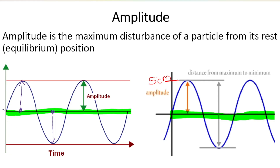If this is like an x-axis labeled zero, with the crest at positive two and the trough at negative two — measured in centimeters — the amplitude is two centimeters. The negative two just indicates it's a trough going downward, but you always state amplitude as a positive value: two centimeters. Similarly, in another example, the maximum disturbance from the rest position is five centimeters, so the amplitude is five centimeters.